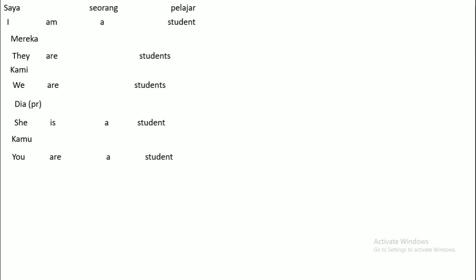We are students. I am a student. She is a student. I am a student, you are a student. Kamu seorang pelajar. Kalian atau kamu sekalian — ini kamu yang banyak ya — you are students. Berikutnya dia perempuan bukan seorang pelajar: She is not a student.